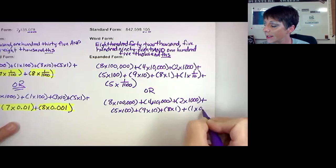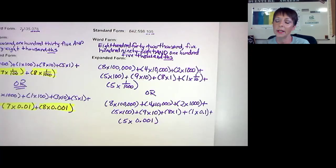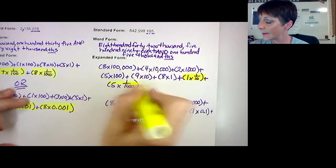Or I could write it with the decimal expanded form. So I'm just going to repeat what I did on top. 8 times 100,000, plus 4 times 10,000, plus 2 times 1,000, plus 5 times 100, all these whole number place values that we're working with. And now let's do our decimals. So there's a 1 times 1 tenth, and 1 tenth is written as decimal 0.1. And then we're going to do the thousandths, so 5 times thousandths, and thousandths is decimal 0.001. We're going to highlight that so we can see the difference.